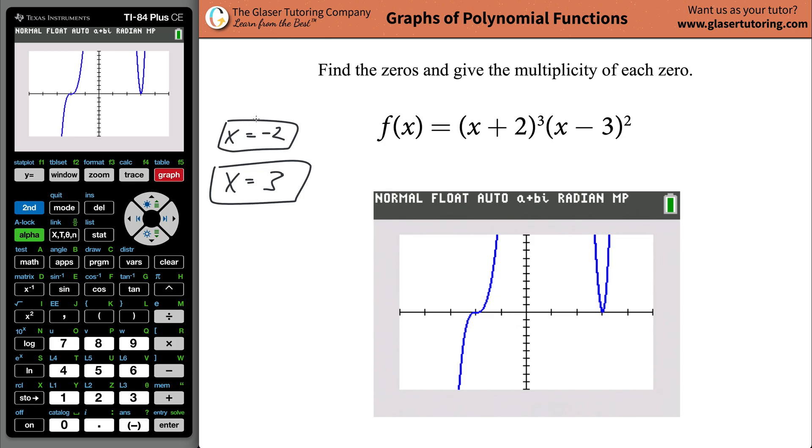So if you notice, like we said, one of the x values should be negative two, that's where it should cross that x axis. So that is a negative two value there for x. And here, this is a positive three value for x, and that's kind of what we said. Now what we have to do here is identify the multiplicities of each zero.